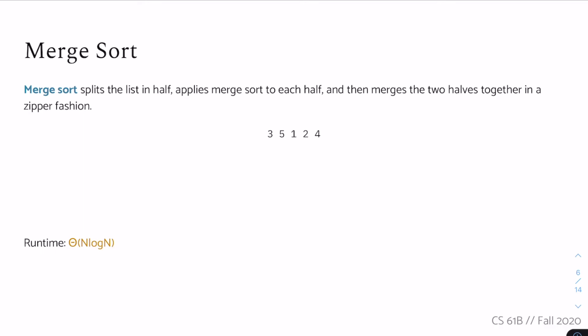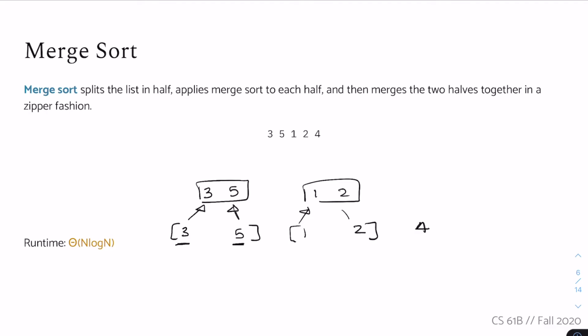Next we move on to some better sorts. The first is merge sort. Merge sort starts with each number in its own little list — each single-element sublist is already sorted. We merge together adjacent sublists by zippering them: we compare three and five, three is smaller so it goes first, giving us three-five. Then we also get one-two and four as sublists.